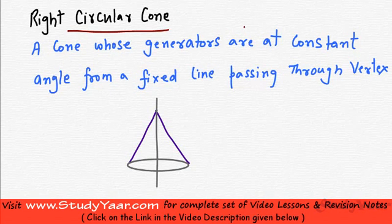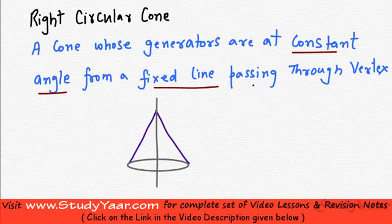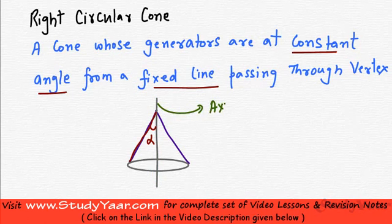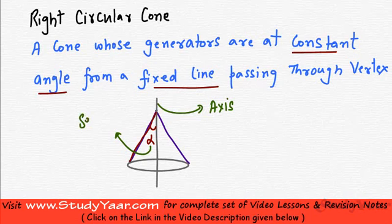Let's learn about a right circular cone. What is a right circular cone? It is a cone whose generators are at a constant angle from a fixed line which itself passes through the vertex. This fixed line passes through the vertex and the generators are at a constant angle from this fixed line — let's say that angle is alpha. Such a cone is known as a right circular cone; it is the standard cone you have learned in school. This fixed line is known as the axis of the cone, and this constant angle is known as the semi-vertical angle.